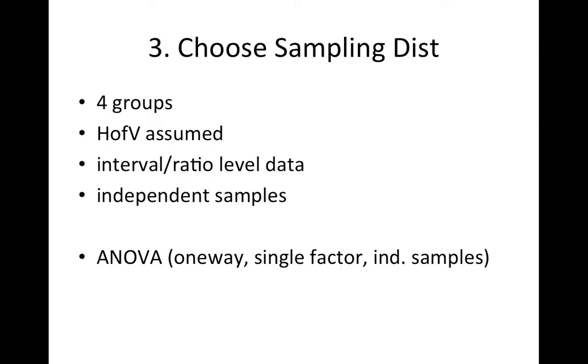So we're going to choose a sampling distribution in step three. We have four groups. We assume homogeneity of variance. We have interval or ratio level data. We have independent samples, random assignment. We're going to do a one-way single factor or independent samples analysis of variance. One-way single factor, independent samples are sort of all synonymous names. They're all the same for a particular form of ANOVA. We're going to learn a number of different ways to do analysis of variance. This is called sometimes a one-way ANOVA or a single factor ANOVA or an independent samples ANOVA.